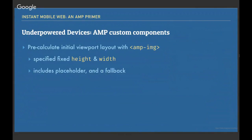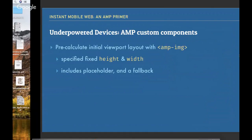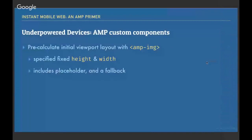AMP also has custom components — similar to React components. AMP image pre-calculates an initial viewport layout by requiring you to define a height and width. This allows AMP to pre-calculate what the viewport will look like on first load — how tall the H1/H2 tags are, how tall the hero image is. You can also include placeholders and a fallback so that if your server is down and the image can't be served, users still get feedback — perhaps a text or gray image.